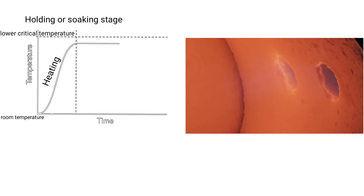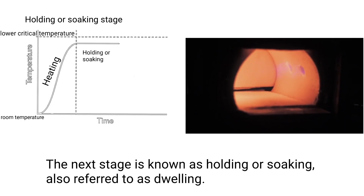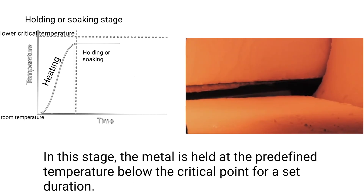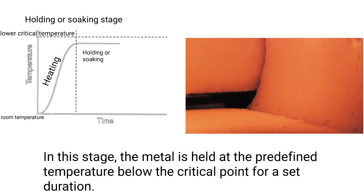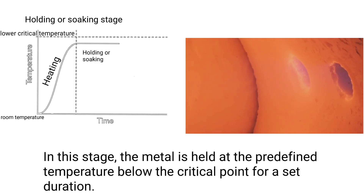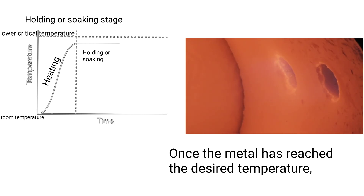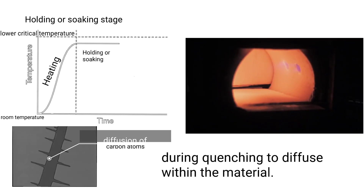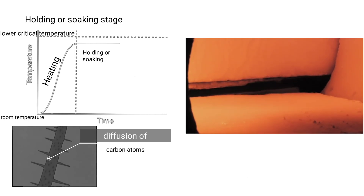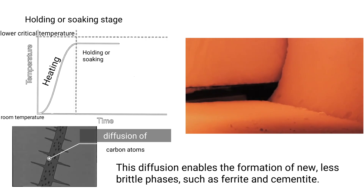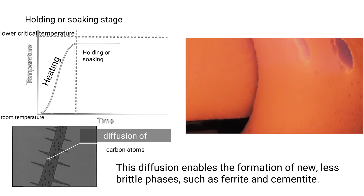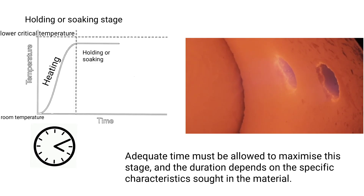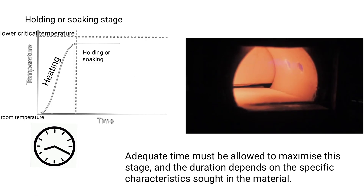The next stage is known as holding or soaking, also referred to as dwelling. The metal is held at the predefined temperature below the critical point for a set duration. This holding period allows carbon atoms trapped within the martensite during quenching to diffuse within the material. This diffusion enables the formation of new, less brittle phases such as ferrite and cementite. Adequate time must be allowed to maximize this stage, and the duration depends on the specific characteristics desired in the material.